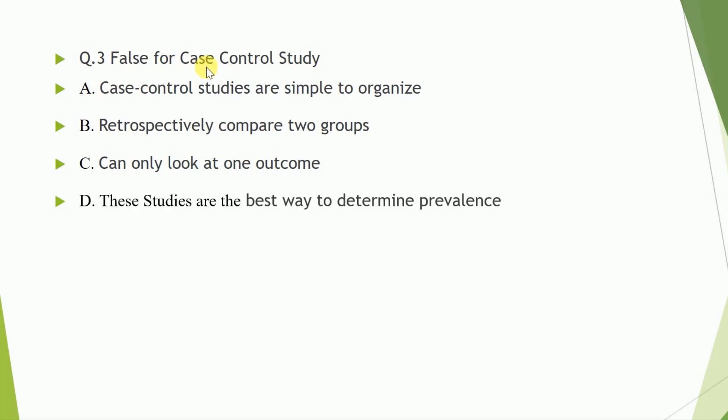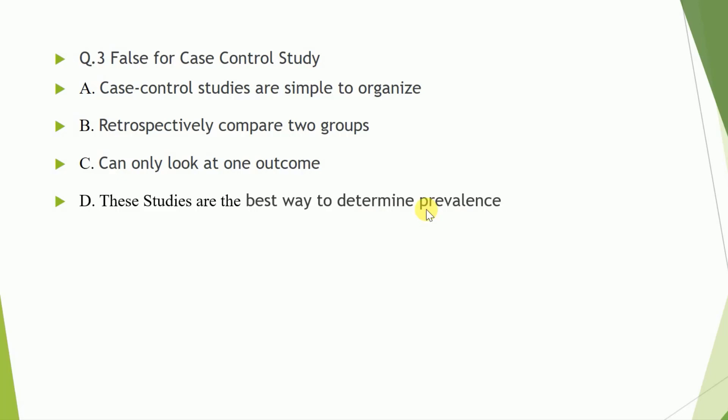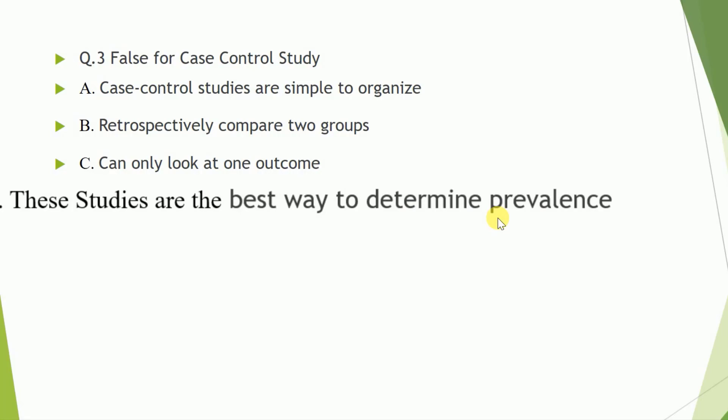Question number three: False for case control study. A. Case control studies are simple to organize. B. Retrospectively compared two groups. C. Can only look at one outcome. D. These studies are the best way to determine prevalence.